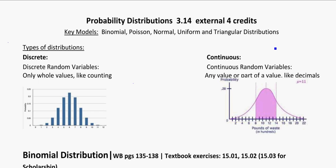So this is very brief, but we're going to be learning about binomial, Poisson, normal, uniform, and triangular distributions. And they kind of fall into two different categories. They're either discrete or continuous.